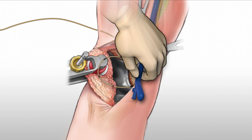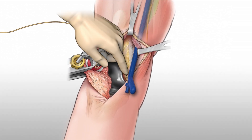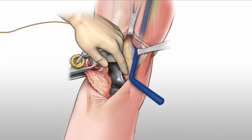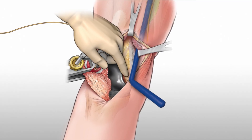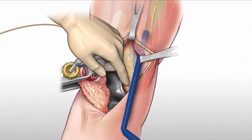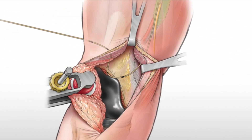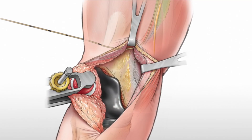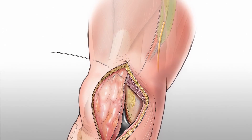Pinching the catheter against the femur, the trocar is removed. Rotating the handle medial while continuing to pinch the catheter against the femur, the slotted cannula is removed. The small loop of catheter is reduced by gently pulling the catheter snugly against the femur, leaving the catheter in place to provide a continuous adductor canal block.